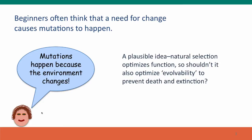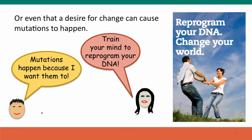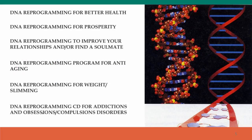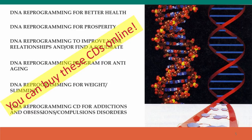Beginners often think that a need for change causes mutations to happen — that mutations happen because the environment changes. This makes sense intuitively. Natural selection optimizes function, so why didn't natural selection act on the ability to evolve, to prevent death and extinction? People often think that even a desire for change can cause mutations to happen. There are people who will sell you tools purporting to reprogram your DNA — here's a big list of CDs — but none of them are actually going to tell you how to change your DNA, because you can't do that.